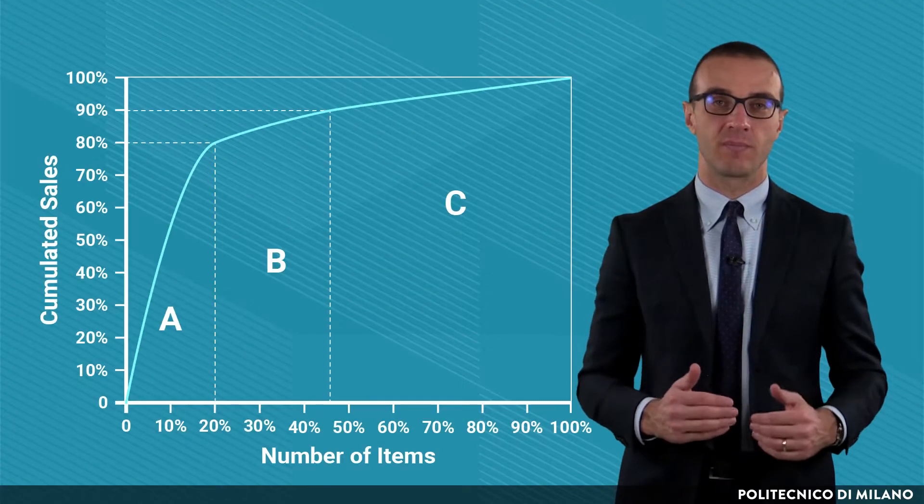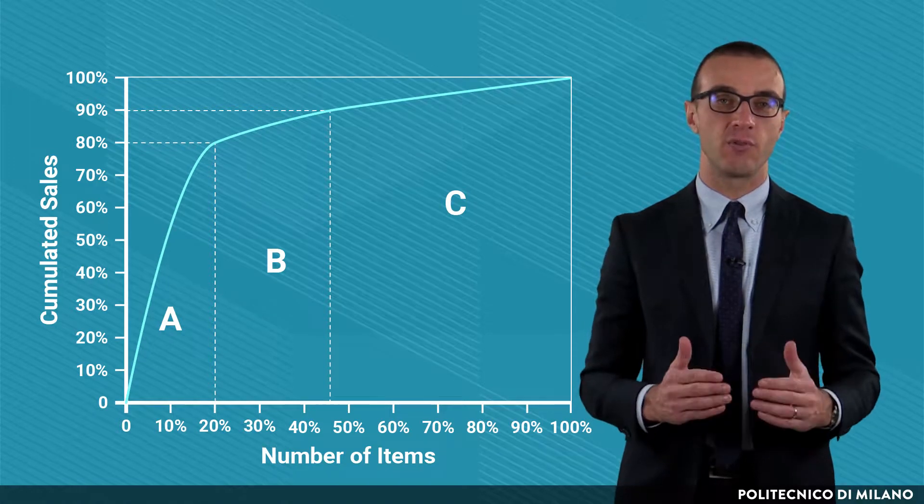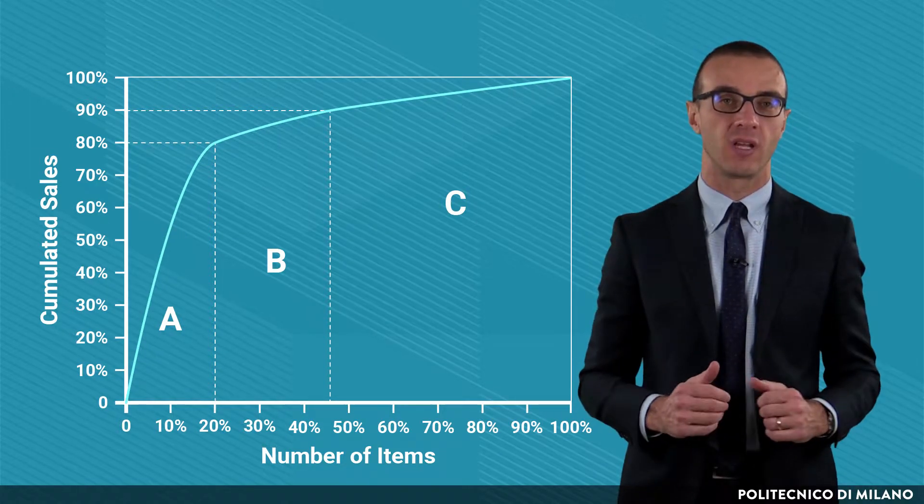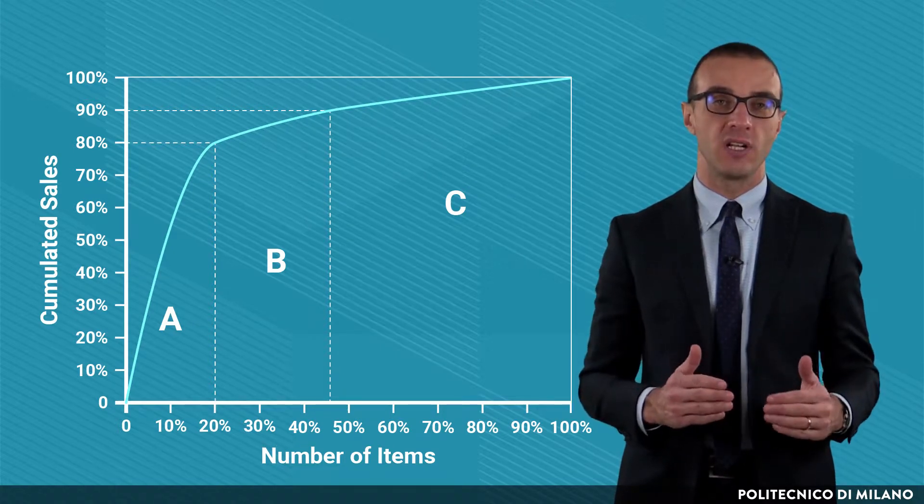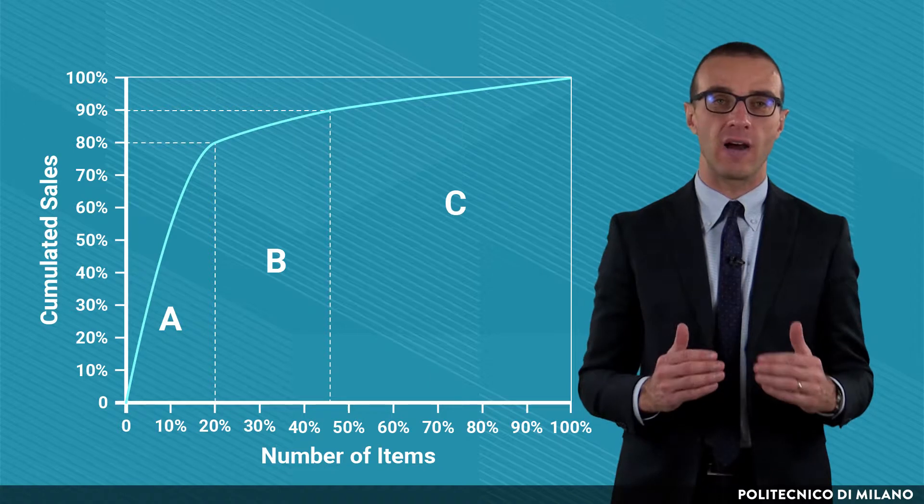Let's consider now the sales, applying exactly the same approach just used for the inventory. If you do the computations, you will discover that 20% of the items determines 80% of the value of the sales.